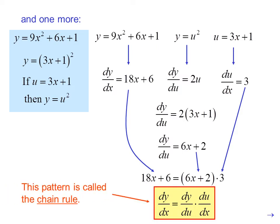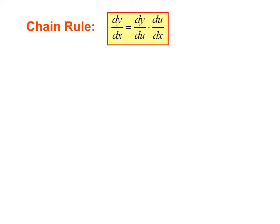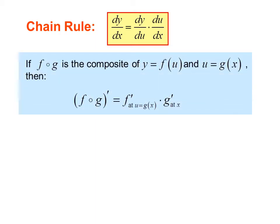This pattern is called the chain rule: dy/dx equals dy/du times du/dx. If f∘g is the composite of y equals f(u) and u equals g(x), then (f∘g)′ equals f′ at u equals g(x), times g′(x).